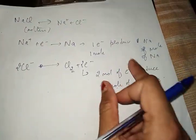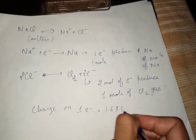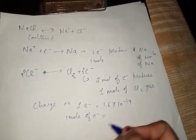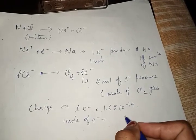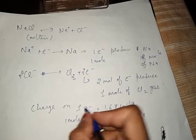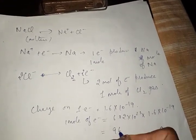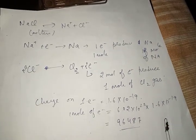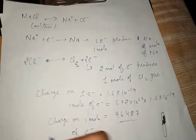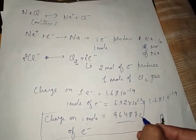Now, the charge on one electron is 1.6 × 10⁻¹⁹ coulombs. The charge on one mole of electrons equals Avogadro's number times the charge on one electron. Avogadro's number is 6.02 × 10²³. When we solve this, we get 96487 coulombs — this is the charge on one mole of electrons.